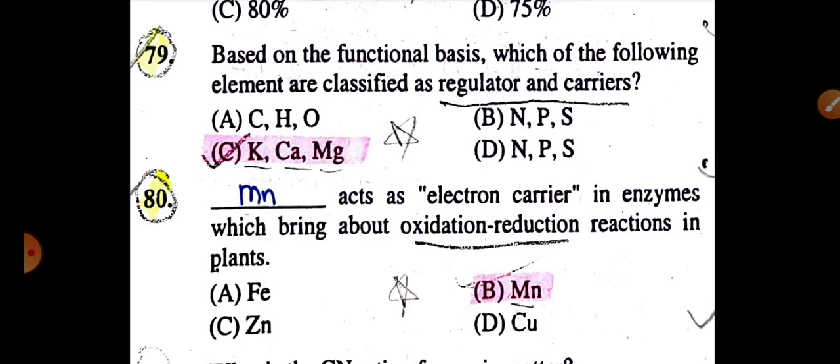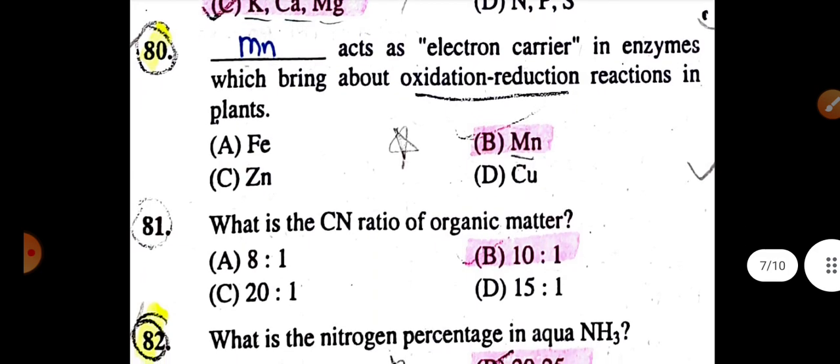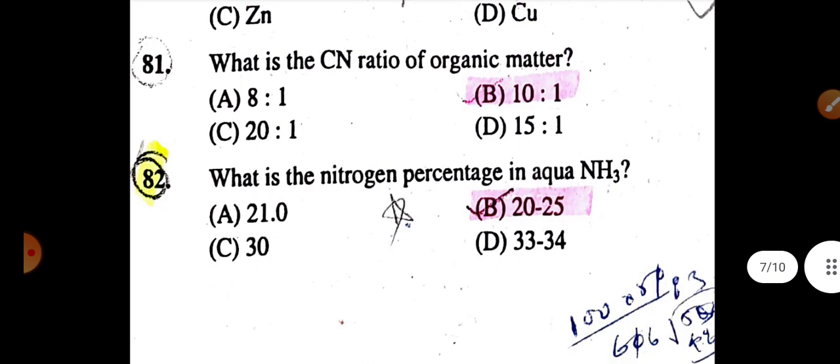What is the percentage of water-soluble potassium in FYM is nearly 90%. Based on functional basis, which of the following elements are classified as regulator and carrier: potassium, calcium, and magnesium. Manganese acts as electron carrier in enzymes which bring about oxidation-reduction reactions in plants. What is the CN ratio of organic matter is 10:1.